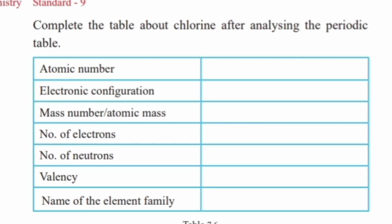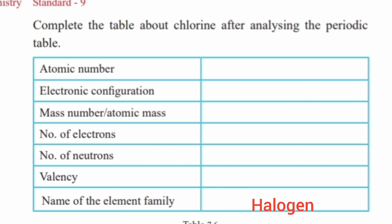Table 7.6 is complete. The atomic number of chlorine is 17. Its electronic configuration is 2, 8, 7. The mass number is 35.5. The number of electrons is 17 and the number of neutrons is 18. The valence is 7. Chlorine belongs to the halogen family.